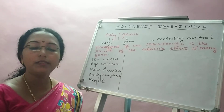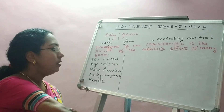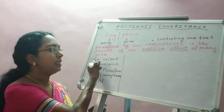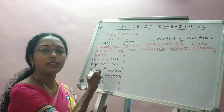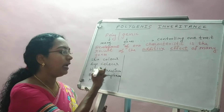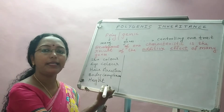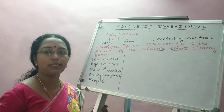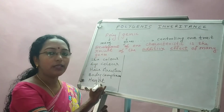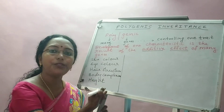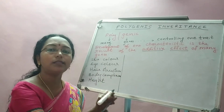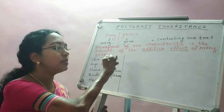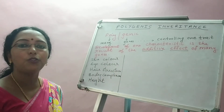Here are five examples of polygenic inheritance: skin color, eye color, hair structure, body complexion, and height. These traits are not under the control of one gene alone, but under the control of many genes. It is the additive effect of these genes that results in these characteristics in the human body.